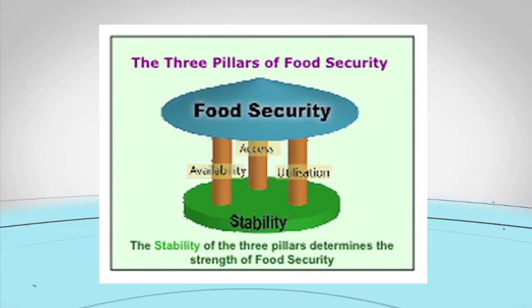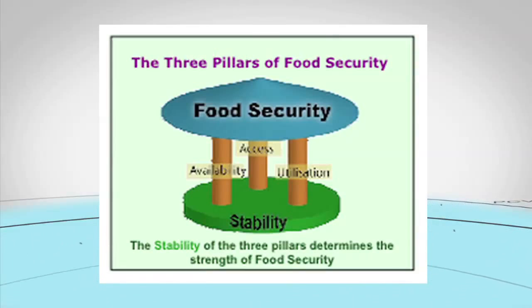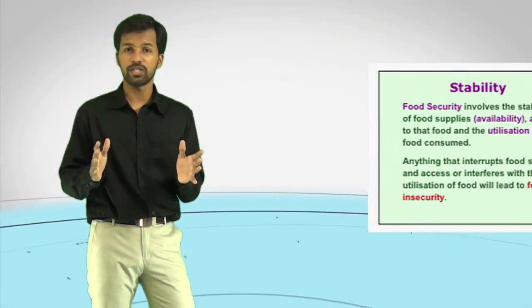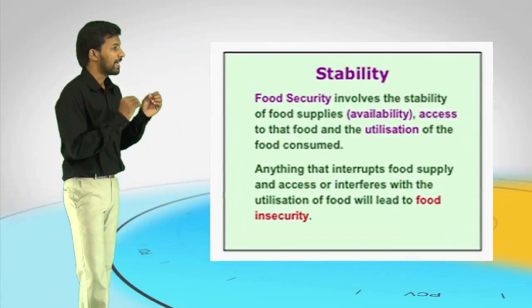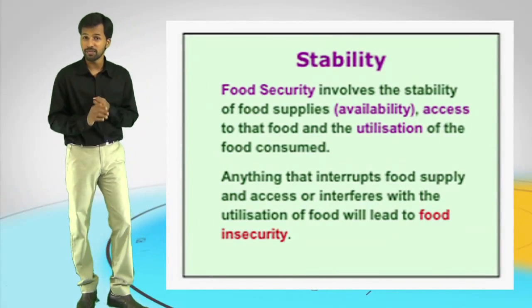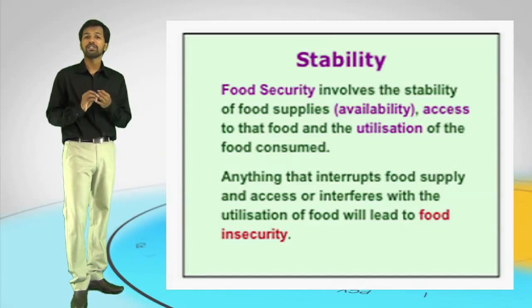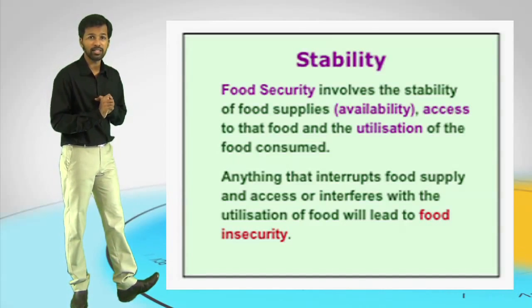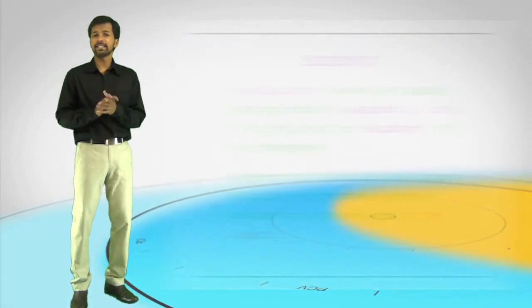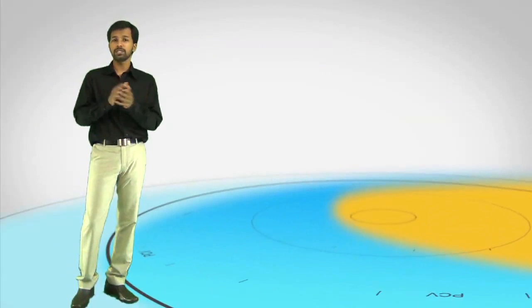These three pillars stand on the foundation of stability. If any of those pillars are not stable enough, your food security will not happen — it will lead to food insecurity. So if there is lack of availability, no physical and economic access, and no proper utilization, there will be food insecurity. That's the basic understanding of food security which we need.